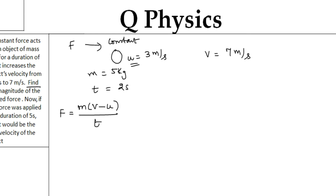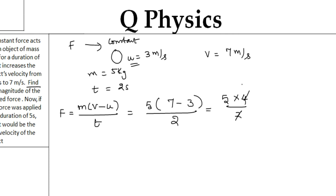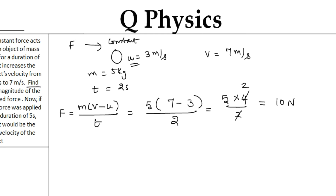Substituting the values: F = 5 × (7 − 3) / 2. That equals 5 × 4 / 2, which simplifies to 10 Newtons. So the constant force acting on the object is 10 Newtons.